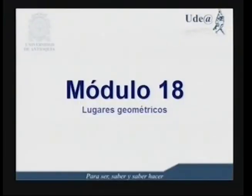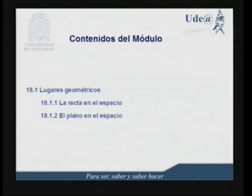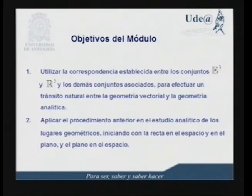Bienvenidos a UDARROA, un programa de la Universidad de Antioquia. Este es el curso de Geometría Vectorial y Analítica. En la sesión de hoy vamos a trabajar del capítulo 5, el módulo 18 correspondiente a los lugares geométricos. Los contenidos que vamos a desarrollar en el módulo corresponden básicamente a los lugares geométricos: la recta en el espacio y el plano en el espacio.